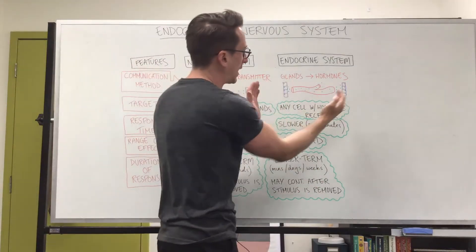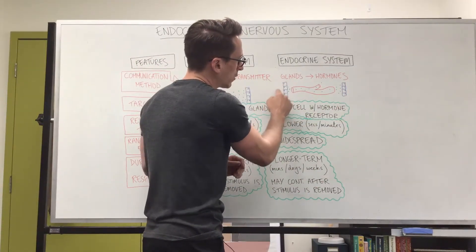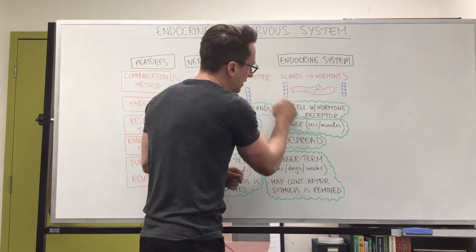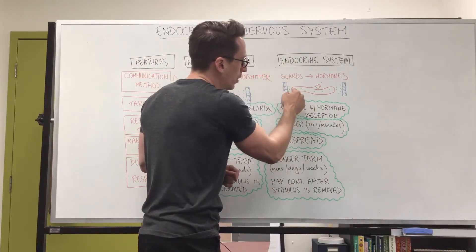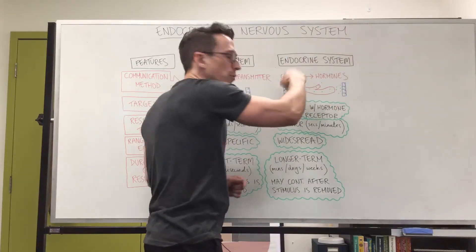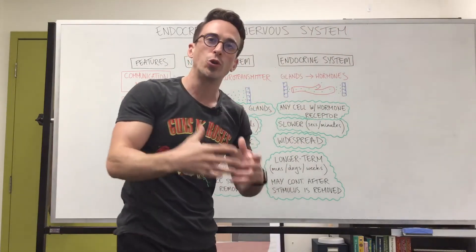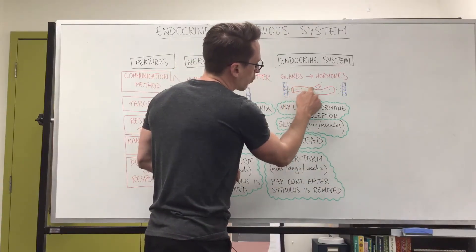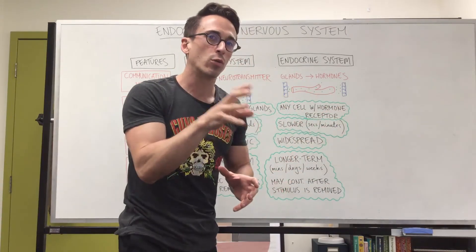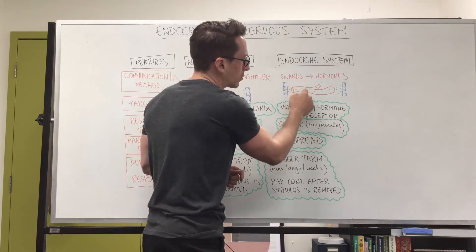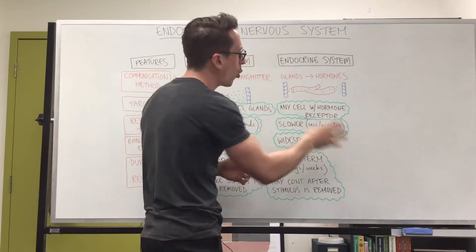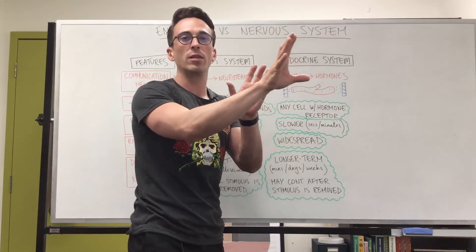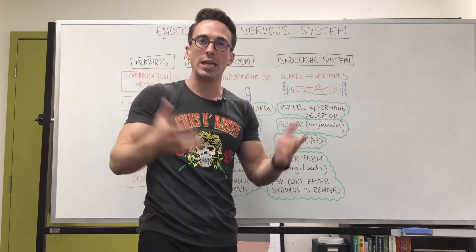A gland or cells release a hormone into the bloodstream, and that hormone can actually act upon those same cells that released it — that's called an autocrine response. Or those cells can engage with receptors on nearby cells — that's called paracrine. Or the hormone can act on cells that are very distant within the body, and that's the normal endocrine response.